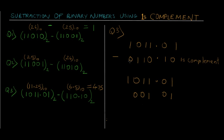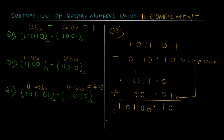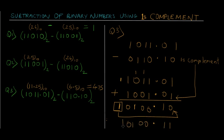The ones complement of 0110.10 is 1001.01. Now we add 1011.01 and 1001.01: the fractional part gives zero with carry, then zero with carry; the integer part gives zero, zero, and then we get zero with a carry out. This extra carry means the result is positive. We add that carry back to the last digit of the result.